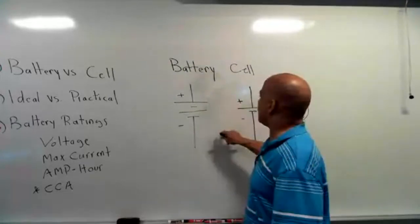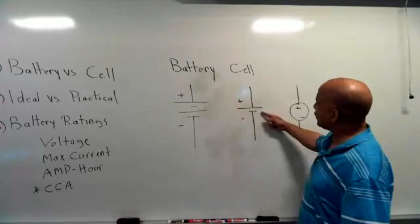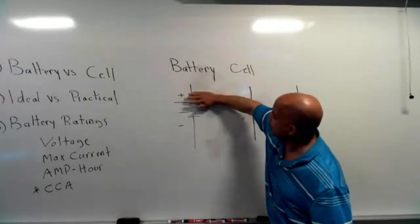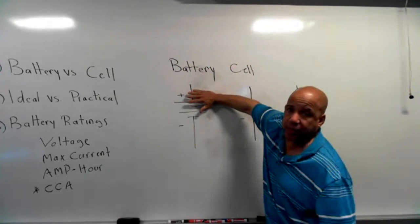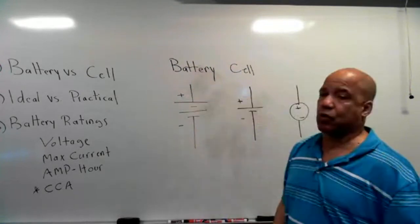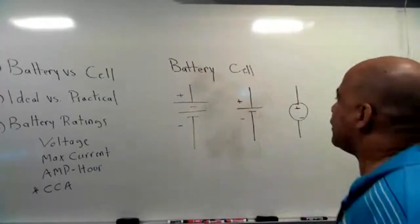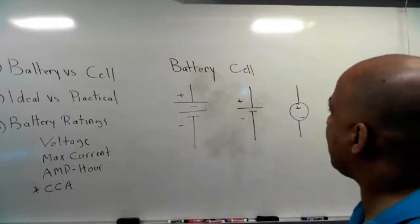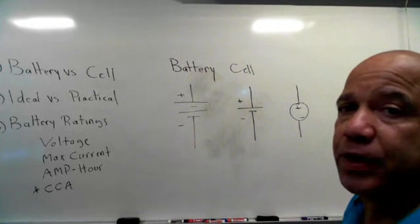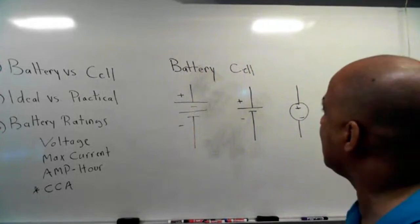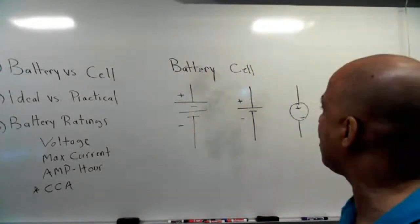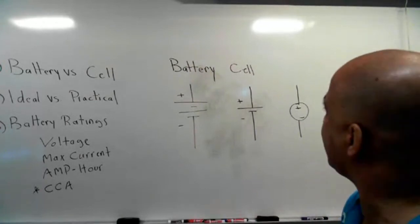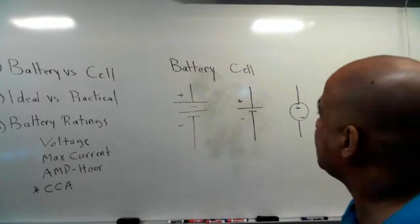All a battery is, is a group of cells. If you look at the way the cell symbol is drawn, it looks like cells put together. A battery is a group of cells, and a cell is the smallest voltage-producing unit you can have. Voltage is anything that separates charge. One thing that separates charge is a cell. Put more than one together and you have a battery.